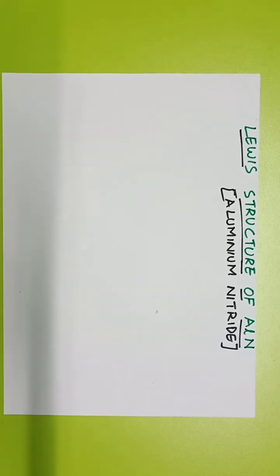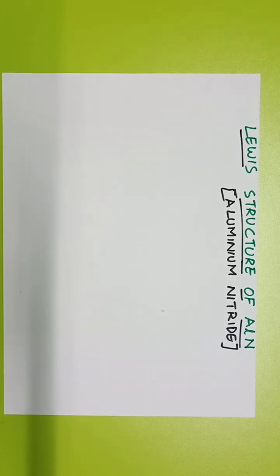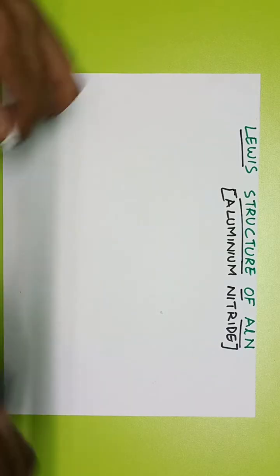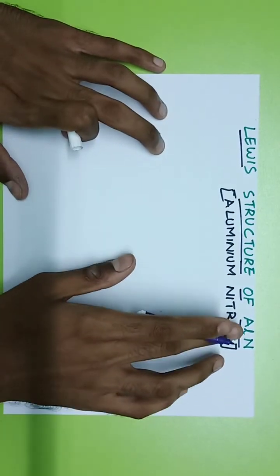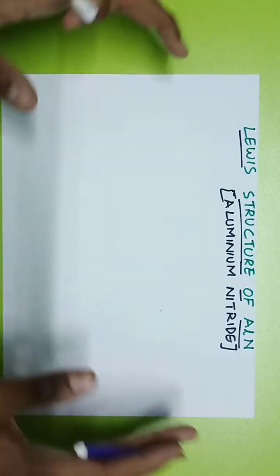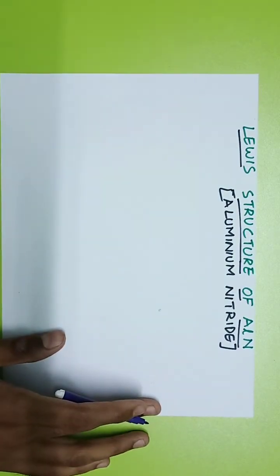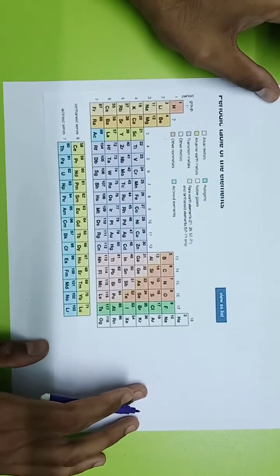Hello guys and welcome to my channel. In this video, we are continuing the Lewis structure series. This video covers the Lewis structure of AlN. AlN is aluminum nitride — N is nitride, and Al is the symbol for aluminum.